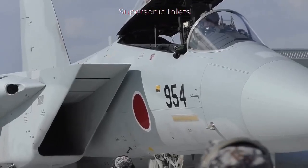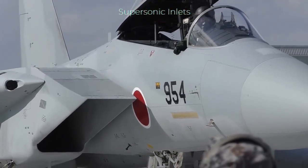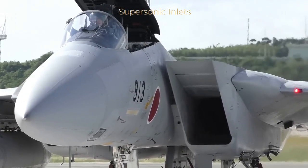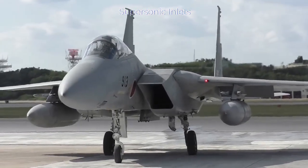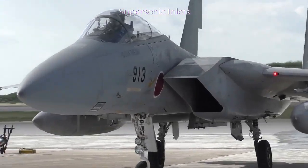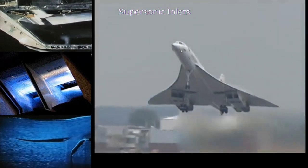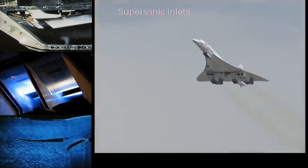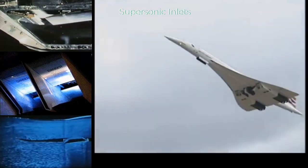On supersonic aircraft, a typical air inlet duct has either a fixed or variable geometry with a diameter that progressively decreases, then increases from front to back. This convergent-divergent shape is used to slow the incoming airflow to subsonic speed before it reaches the compressor. In addition to the convergent-divergent shape, many supersonic inlet ducts employ a movable plug or throat that changes duct geometry according to flight conditions. This variable geometry is necessary so that the duct can accommodate a wide range of flight speeds.